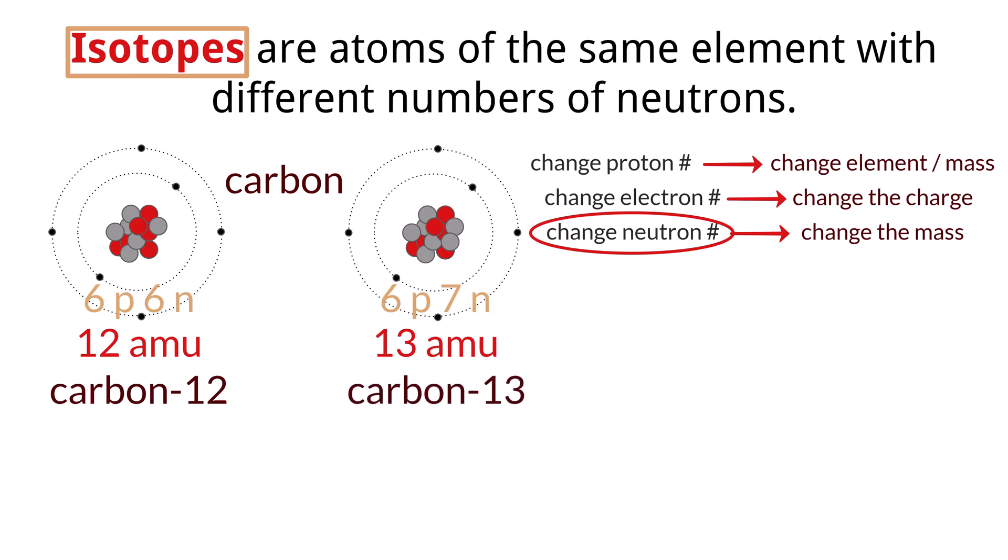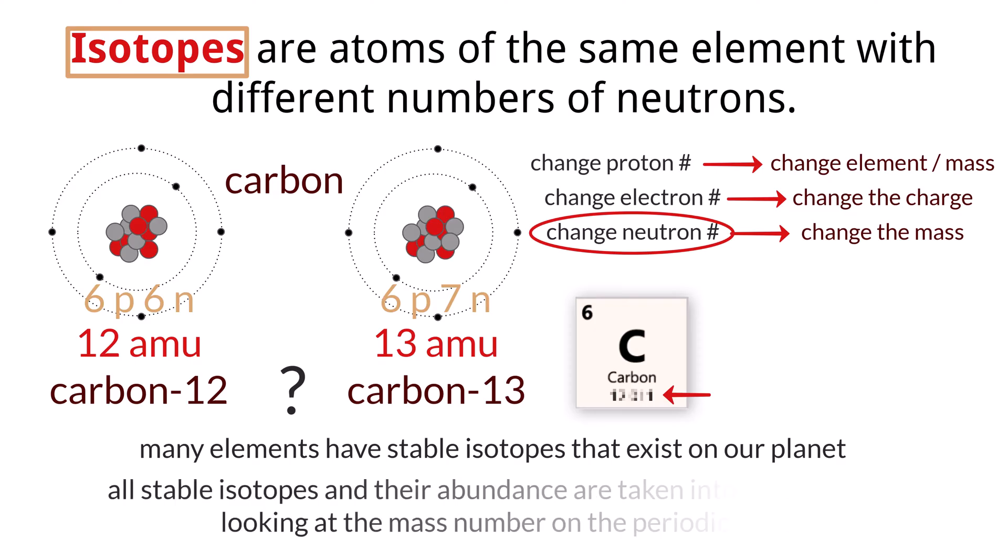Same protons, same electrons, different neutrons. The reality is that many atoms have different isotopes that exist on our planet. Knowing this, and putting together a diagram like the periodic table that has mass number information on it, which isotope should be used? Do we say that carbon has a mass of 12 or 13 on the periodic table, because both isotopes exist? Well, the answer is we actually use all of the isotopes of a particular element.